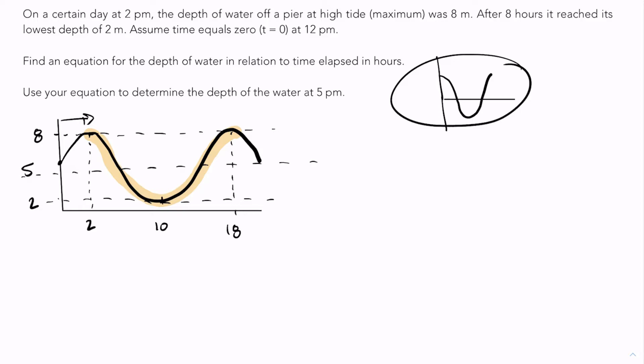So our h value is just going to be minus 2. When we're shifting right, we do minus. So my equation, h of t, is going to be a times cos times b bracket t minus h, which at this point you should already know is 2 for h, and we have plus k.